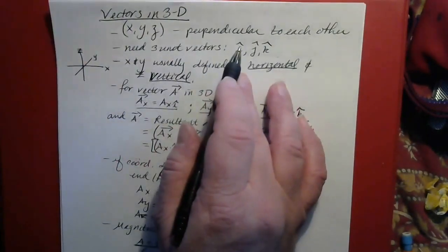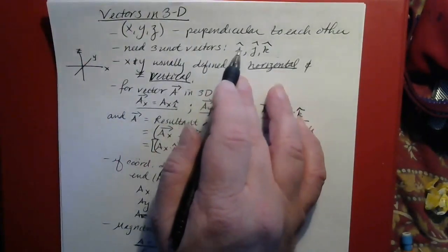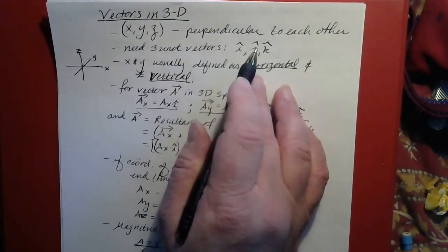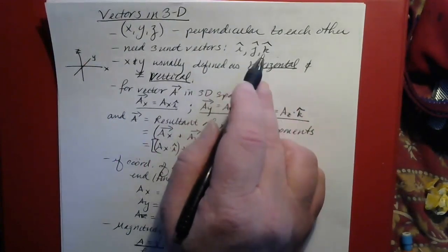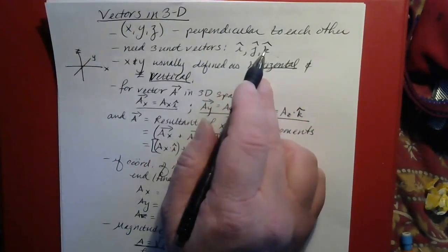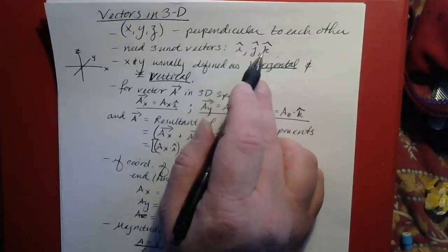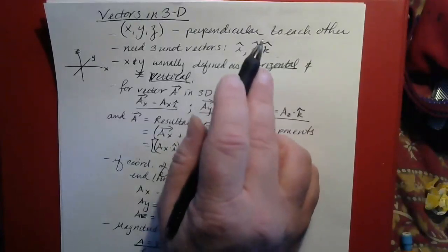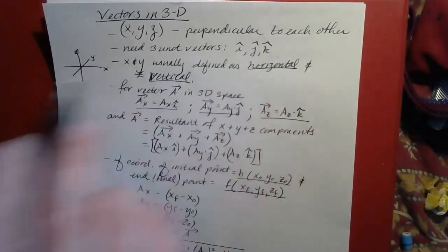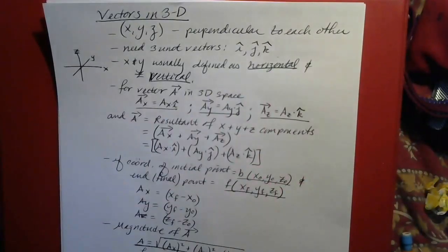We just go on with the alphabet. i and j are the unit vectors for the x and y directions, and so k is the unit vector — with a little hat on it — for the z direction.